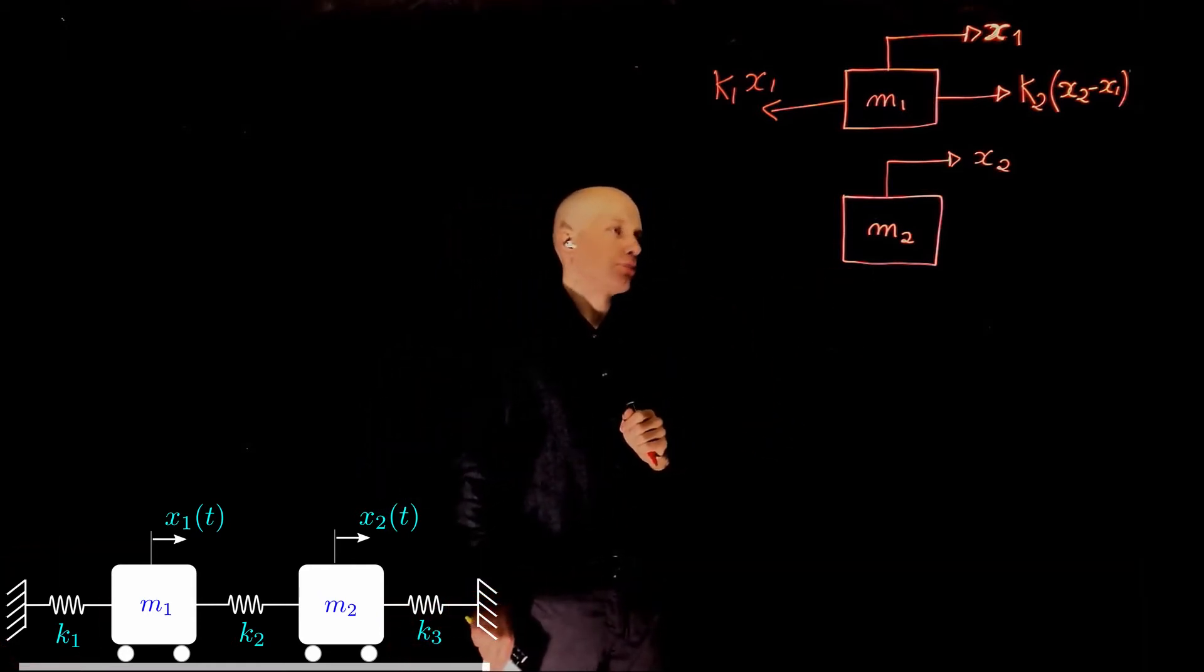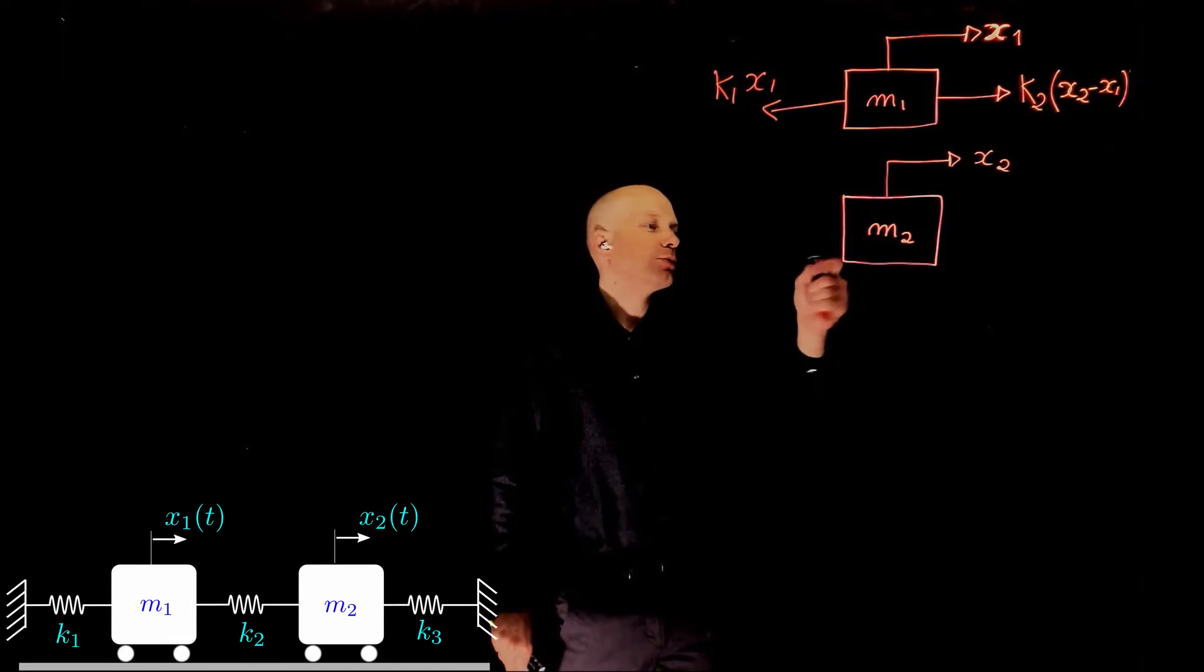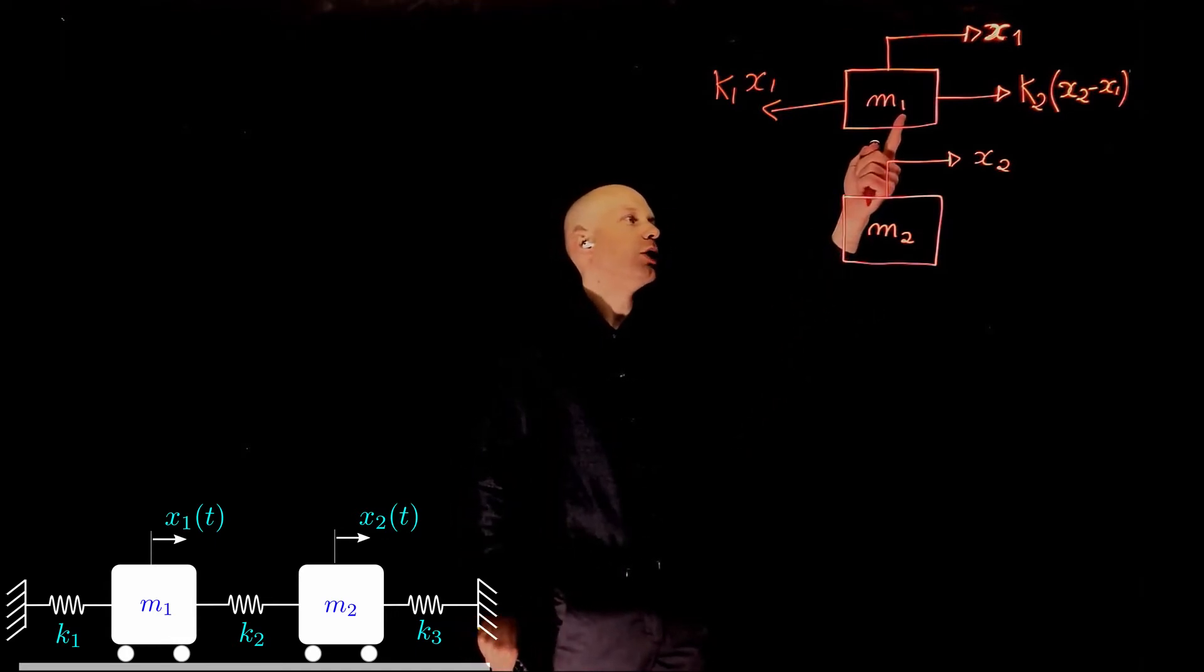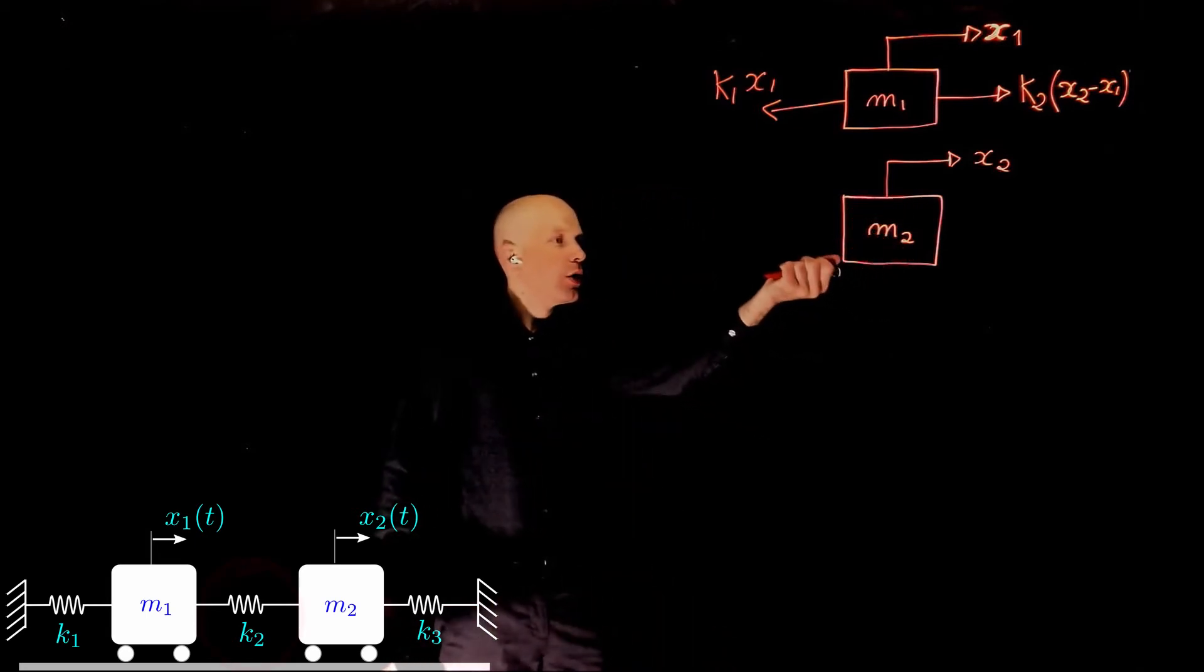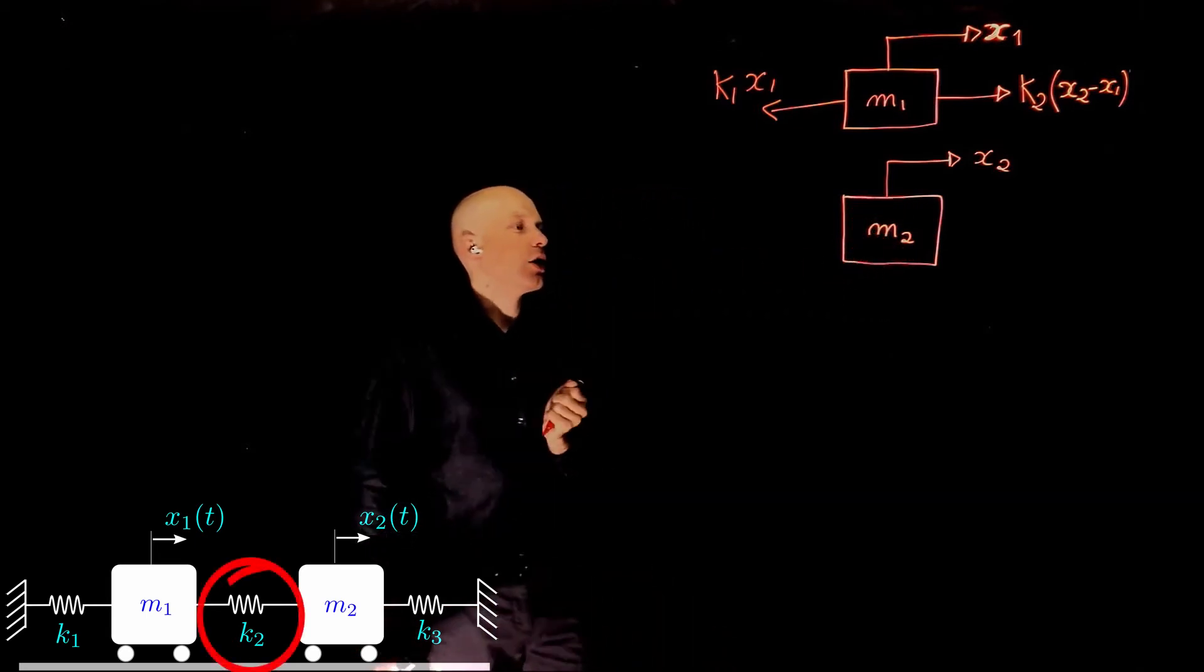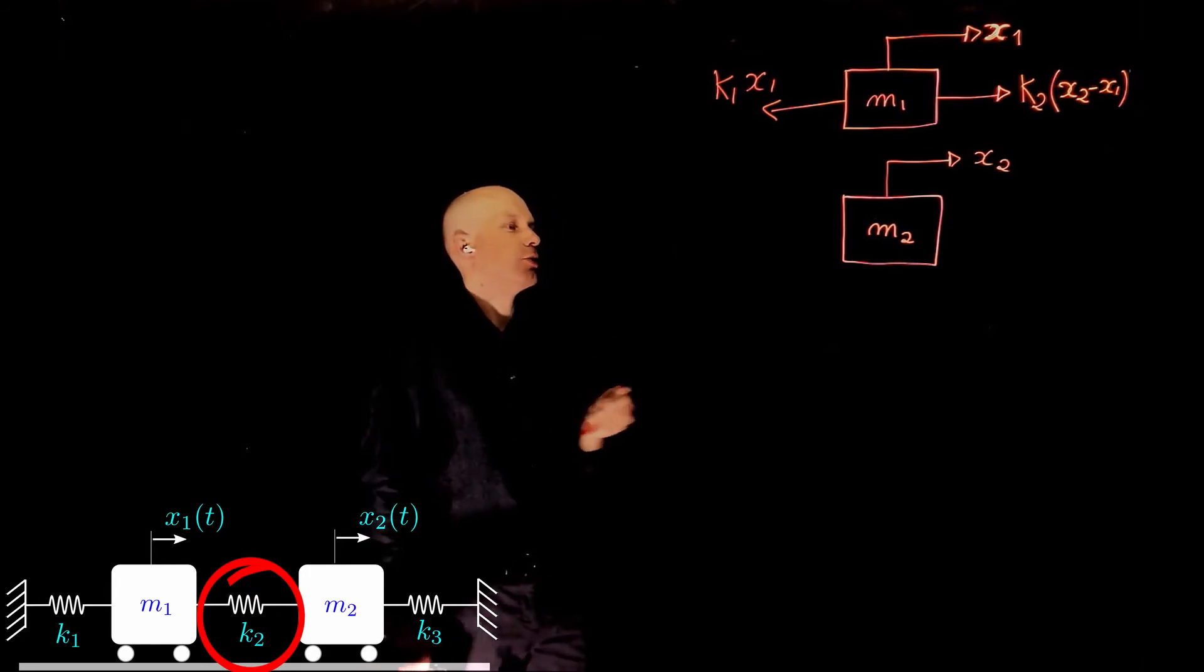Moving now to m2. Now we know that if m2 pulls on mass m1, from the perspective of m2, there is a force now pulling m2 in the opposite direction of motion,